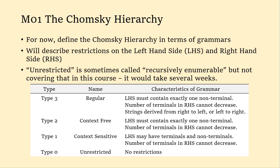The second type is context-free, which is very similar to regular. The left-hand side contains exactly one non-terminal, and the number of terminals on the right-hand side cannot decrease. What we drop is the rule requiring left-to-right or right-to-left derivation — you may build strings in the middle, or build outward from both ends.